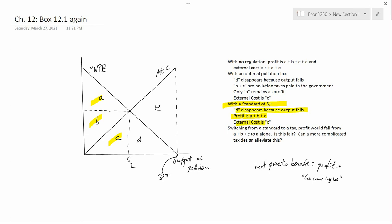External cost is c, which is the same as it is under the optimal pollution tax. The firm likes the standard better than the tax because the firm's profit is bigger.